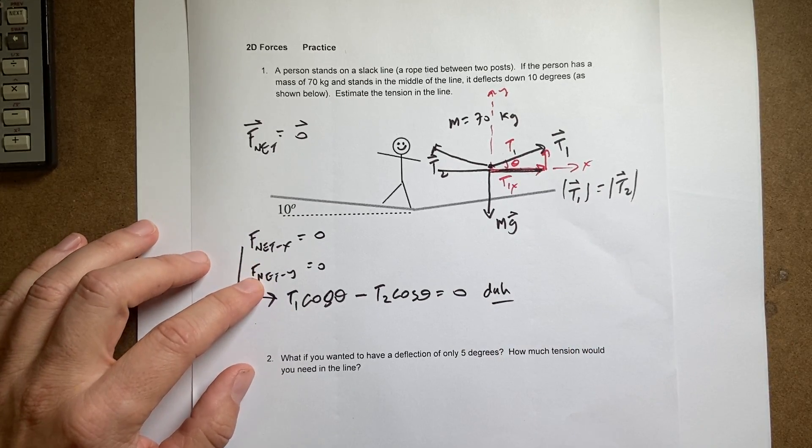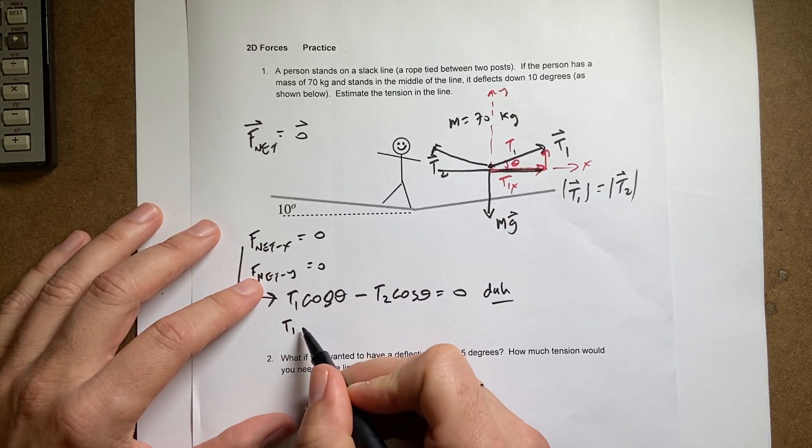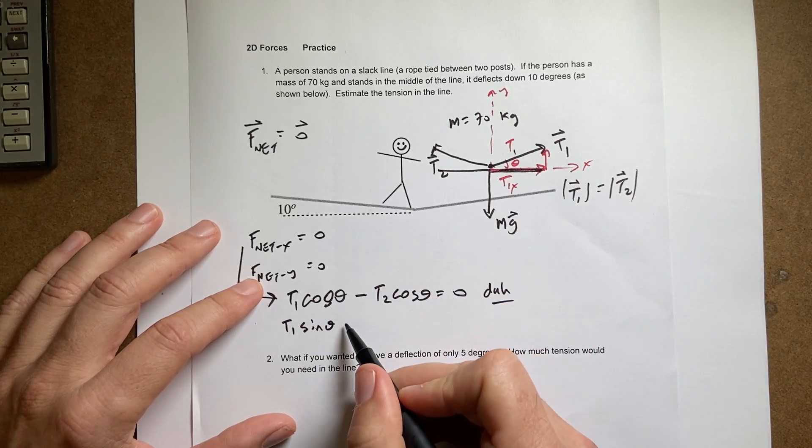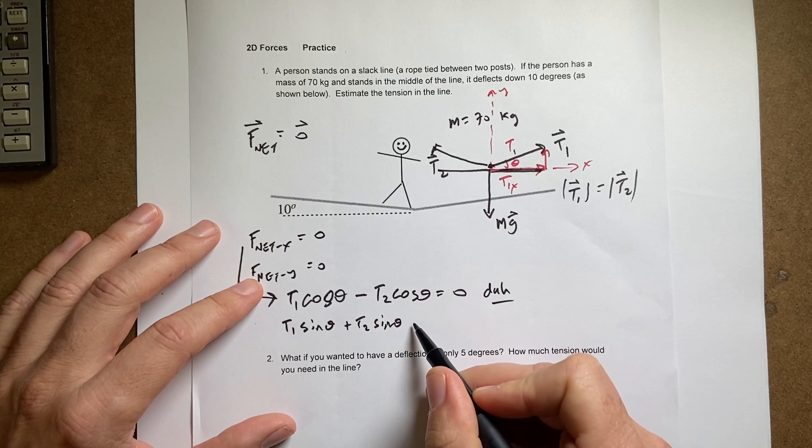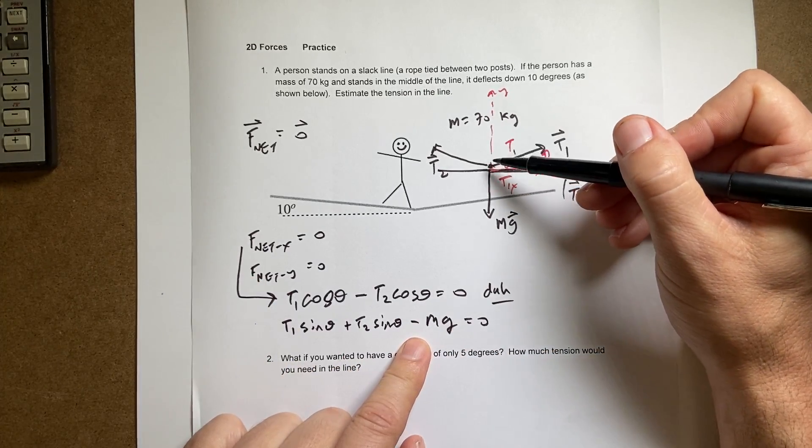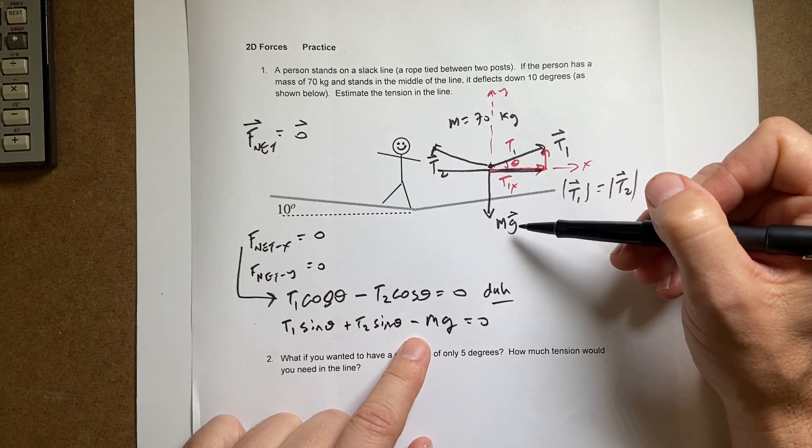Okay, now let's do the y equation then. So here I have T1 is pulling up. That's going to be T1 times sine of theta. T2 is pulling up plus T2 sine of theta minus mg equals zero. So you notice this is minus because now I'm dealing with the y component of the gravitational force. This is a vector force. There's no minus sign there.